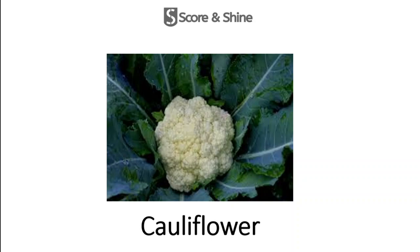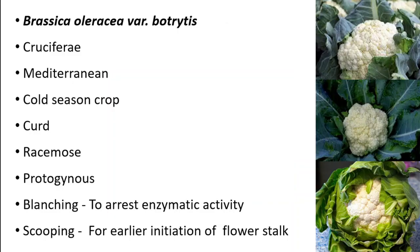Welcome back to my channel Score and Shine. In this video I'll be telling you all about cauliflower, which is one among the cold crops. The scientific name of cauliflower is Brassica oleracea var. botrytis and it belongs to the family Cruciferae. Its origin is from the Mediterranean region and it is a cold season crop.